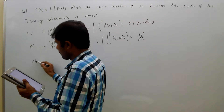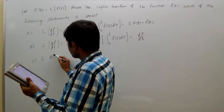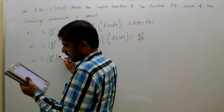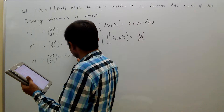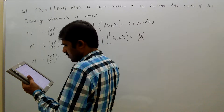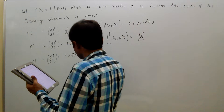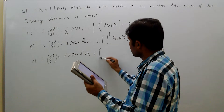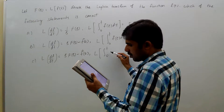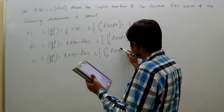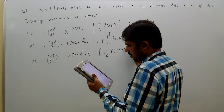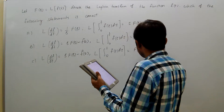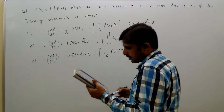Option C: Laplace transform of dF/dt equals S times F of S minus F of 0. Laplace transform of the integral from 0 to t of F(tau) d-tau equals F of S minus capital F of (S minus a).